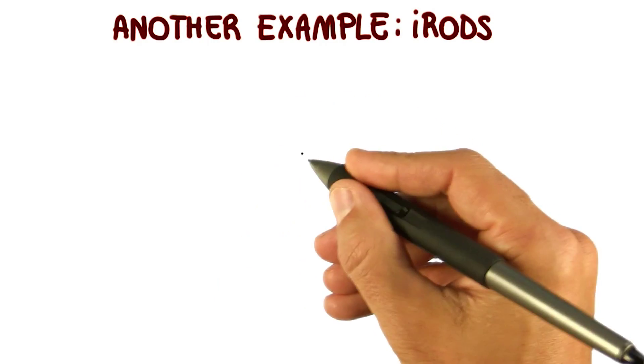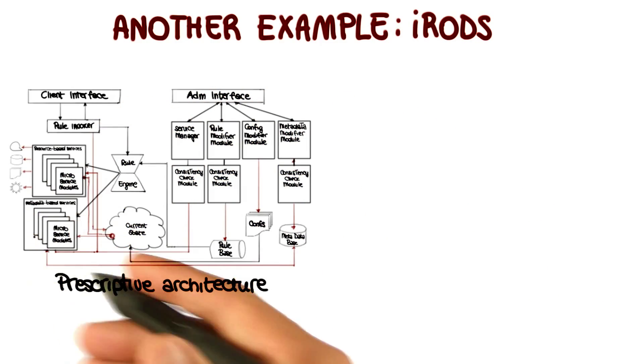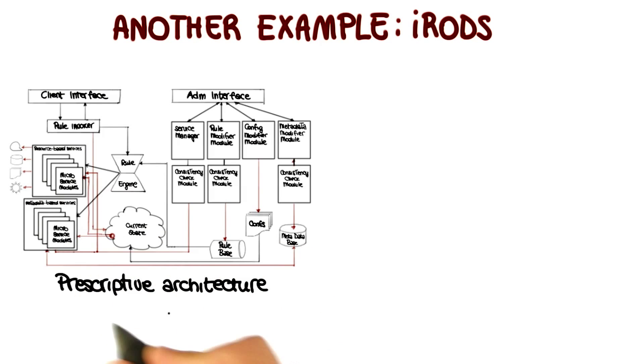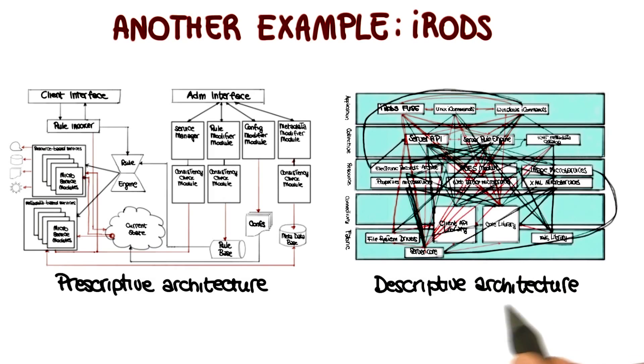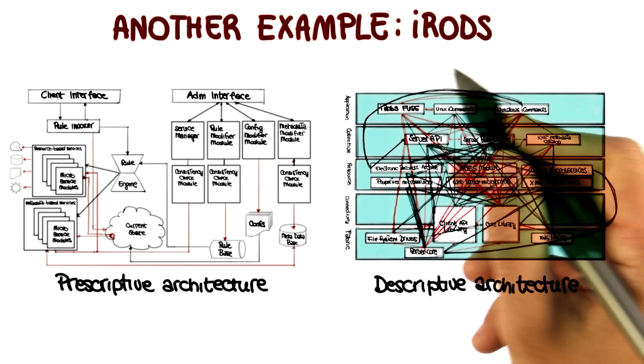So what I'm going to do is the same thing that I did for the Linux system. I'm going to show you here on the left-hand side this clean prescriptive architecture for the iRODS system, and I'm going to show you here on the right the actual architecture of the system, the descriptive architecture of iRODS.